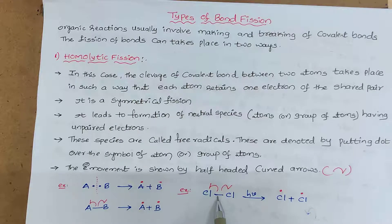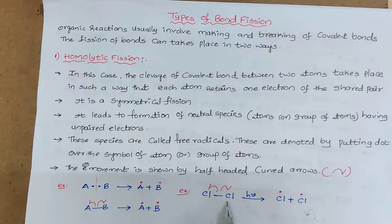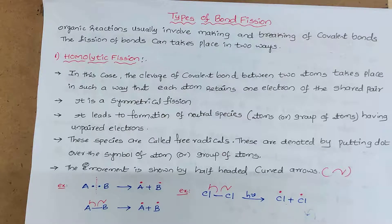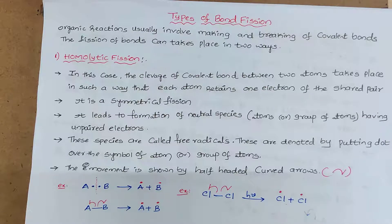In this bond there are two electrons, which are equally shared by the two chlorine atoms. As a result, we get the chlorine free radical. So to remember: in homolytic cleavage, the covalent bond between two atoms is cleaved such that each atom retains one electron of the shared pair. Second, neutral species are formed which are called free radicals, having the unpaired electron. Third, this cleavage can be represented by the half-headed curved arrow.